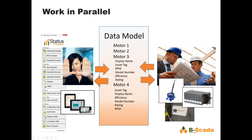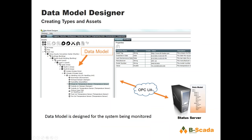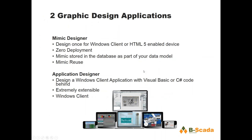All of the Status Enterprise client applications talk to the model directly — none of them know anything about sensors, Modbus addresses, PLC addressing, or anything like that. That data model shows up in all client applications. Here we have the data model designer, where we actually build the model. Building a model is simple: you define a type, like a pump, add properties to that type, then create instances of those assets — the real-world things you're monitoring. That data model is stored in your Status server, whether in the cloud or behind your firewall.